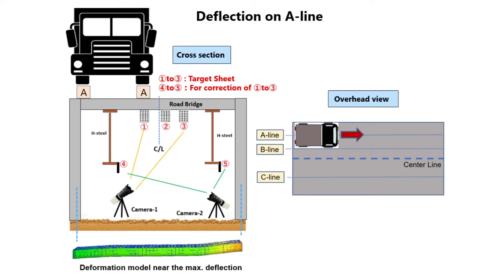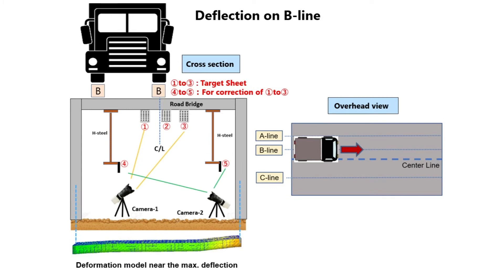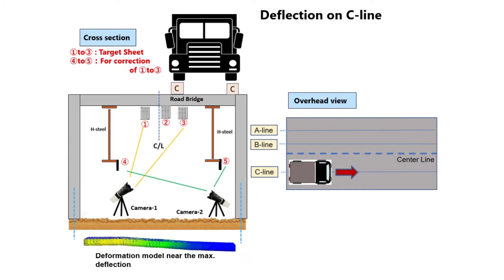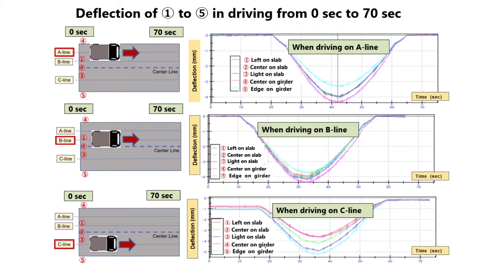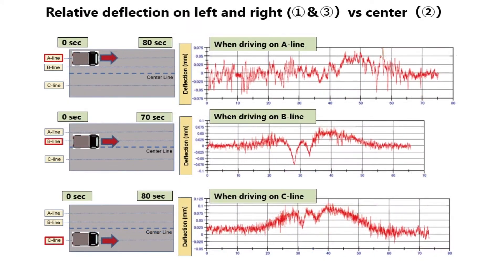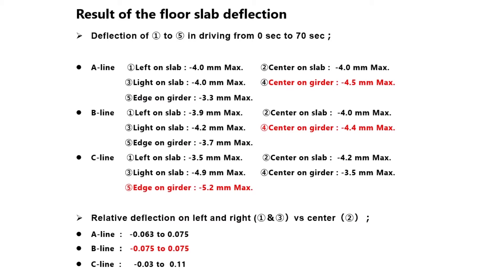Here is a schematic of the driving lines, lattices, and measurement system. You can see the variation in deflection depending on the driving line. This is a comparison of the relative deflection compared to the center line. Pause the video to see the results in more detail.